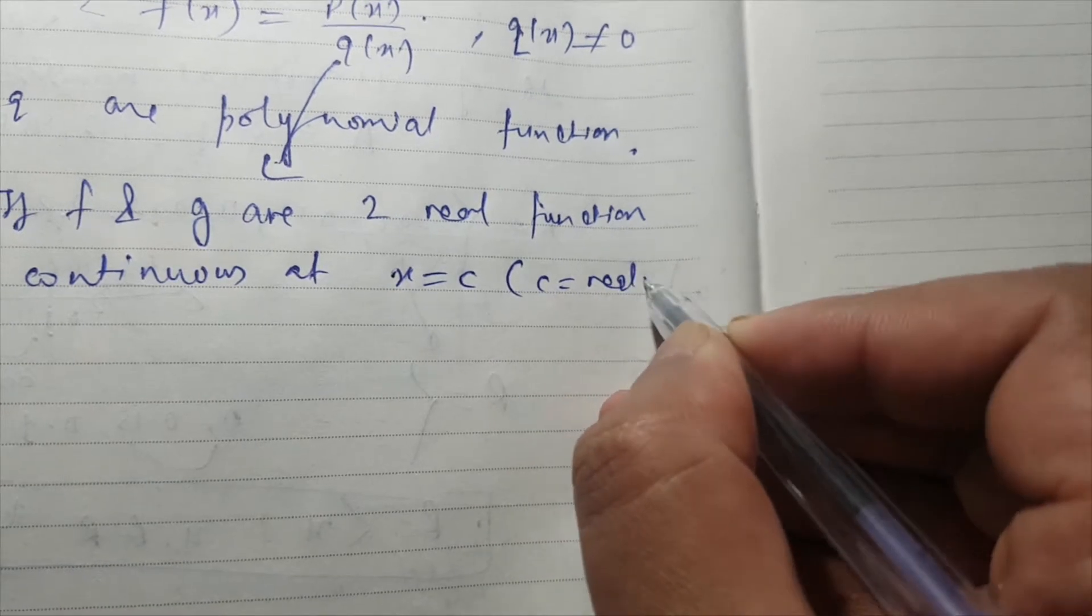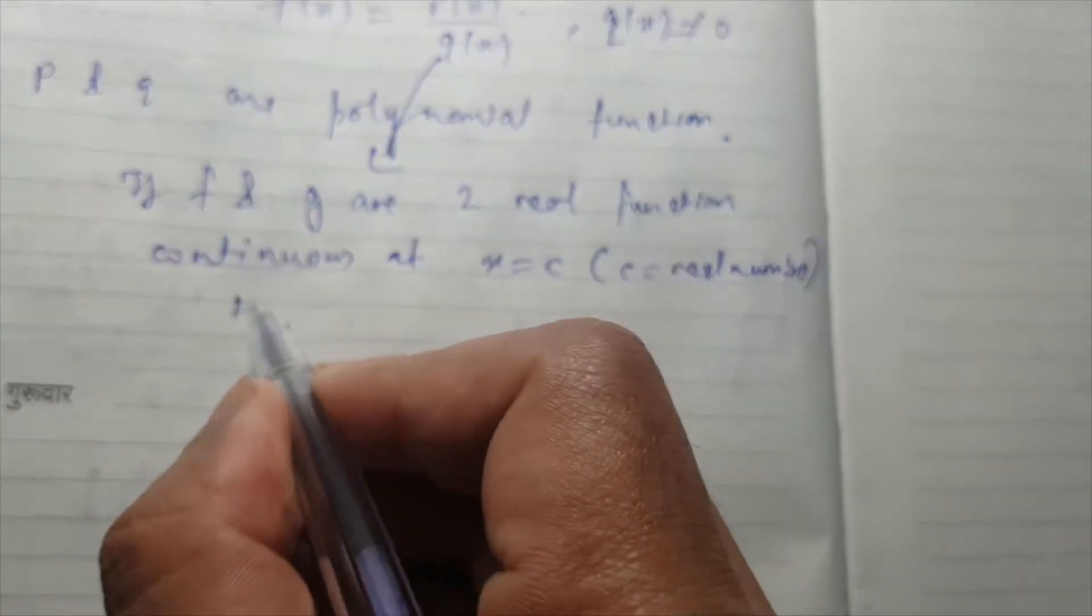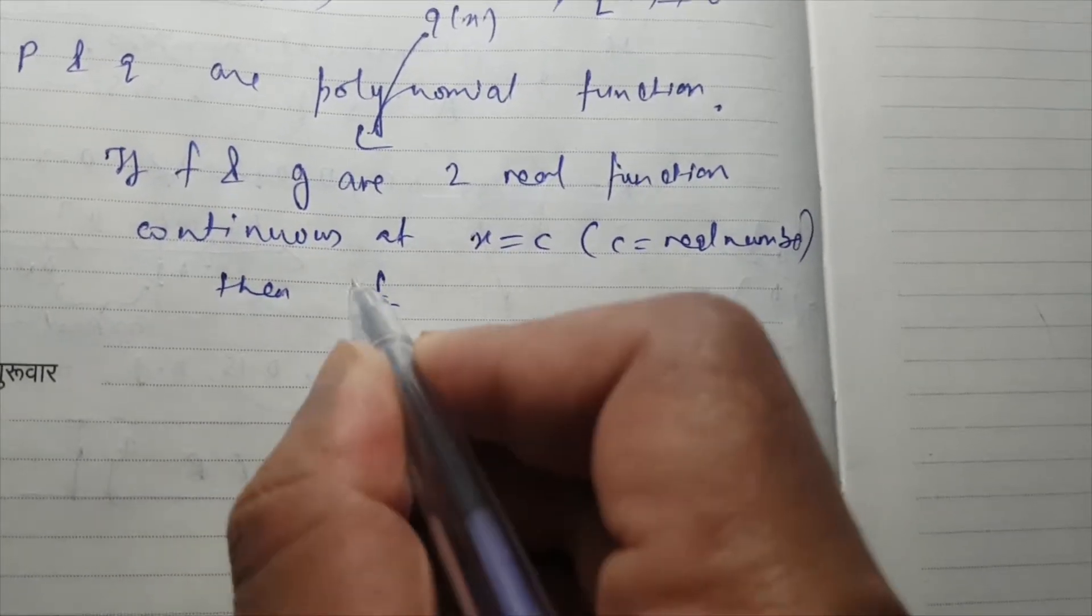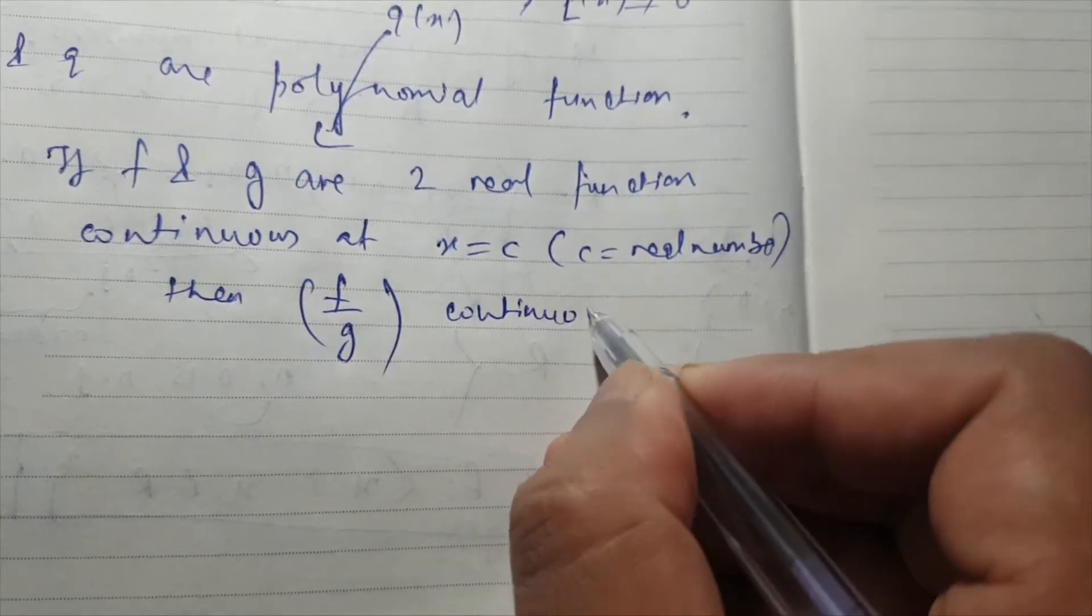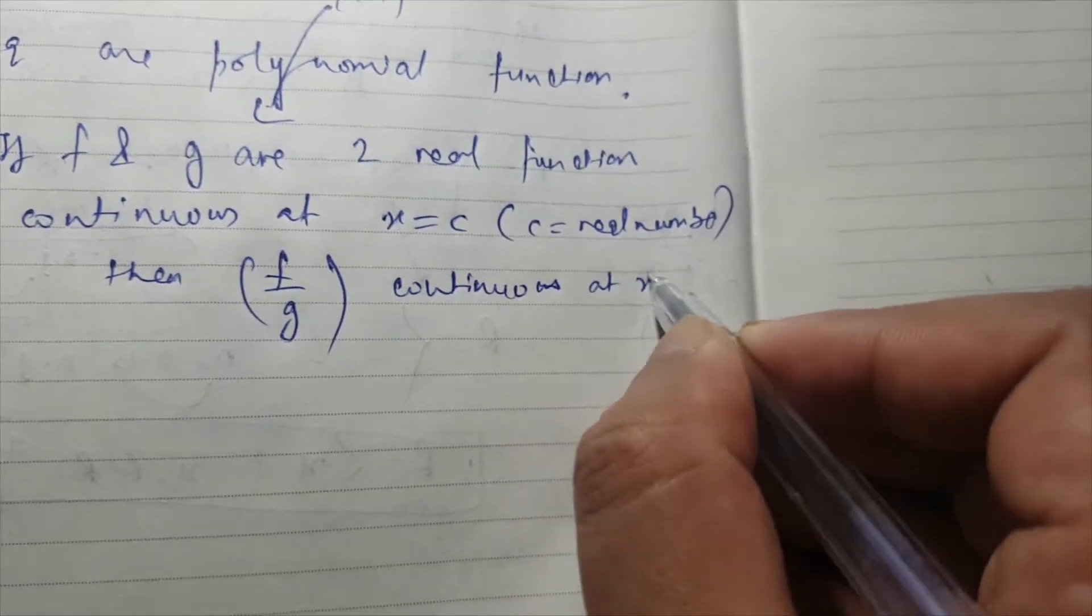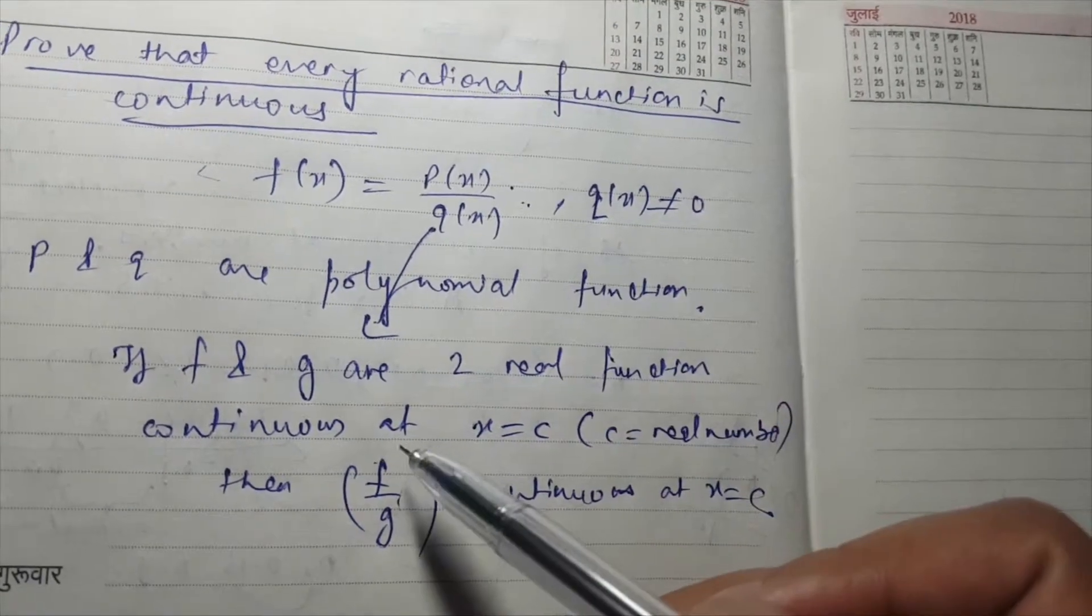then f upon g is also continuous at x equal to c.